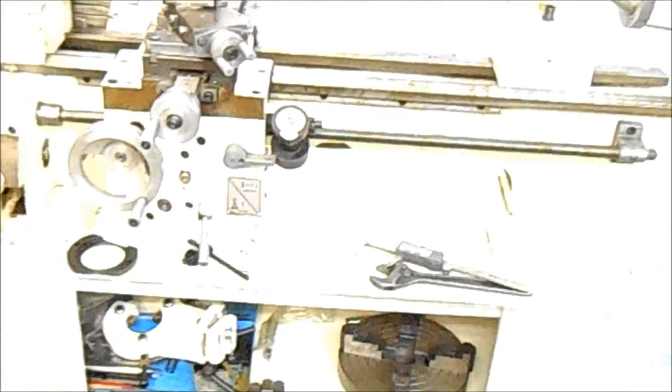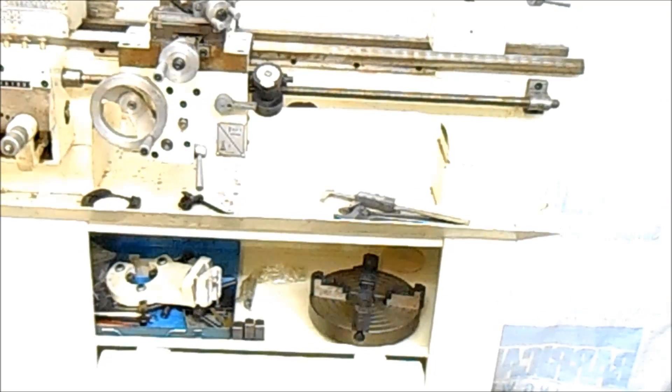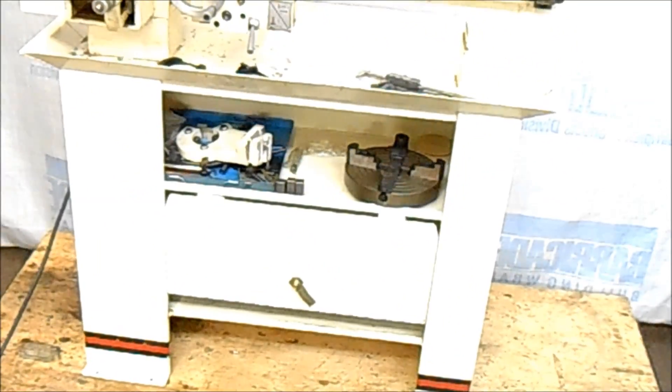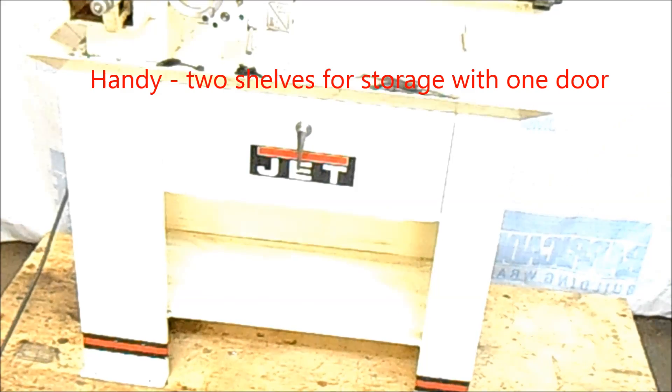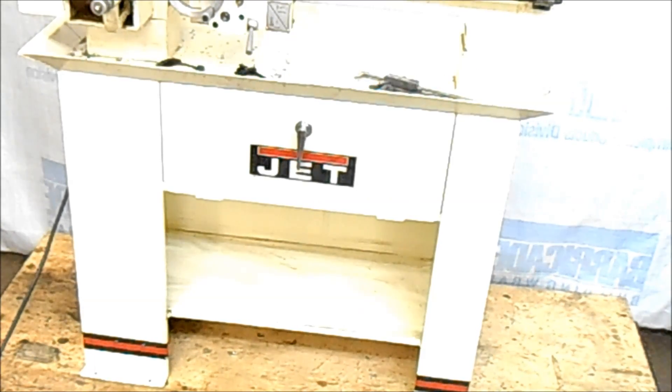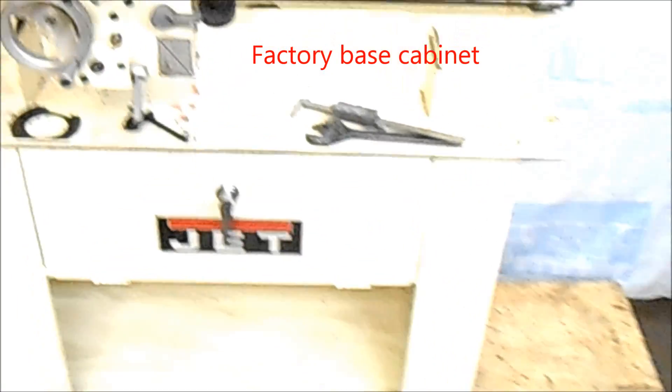So that's the little lathe in operation. It is a Jet BD920N. The door latch works. It's got an extra shelf down below, a factory stand, a factory base cabinet. I'm guessing that's at least a $300 option on this.